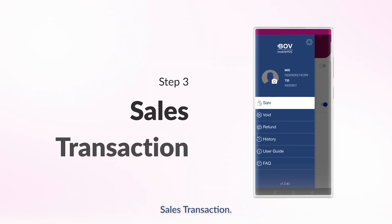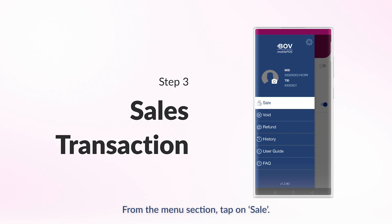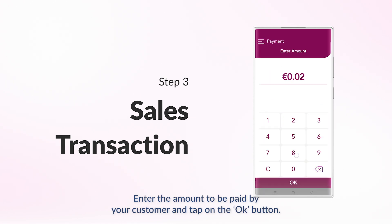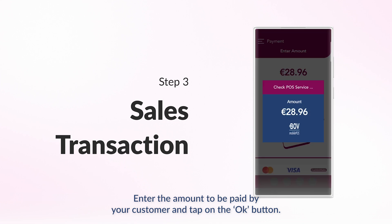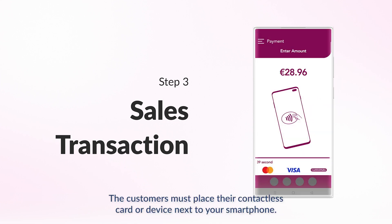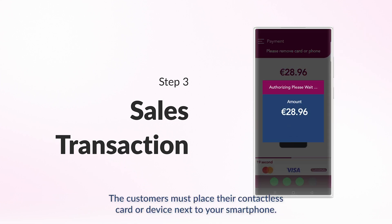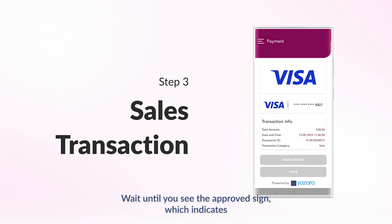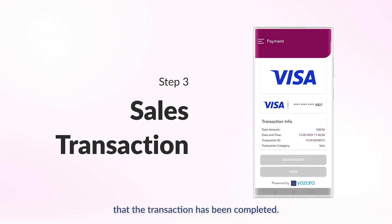Sales transaction. From the menu section, tap on Sale. Enter the amount to be paid by your customer and tap on the OK button. The customer must place their contactless card or device next to your smartphone. Wait until you see the Approved sign, which indicates that the transaction has been completed.